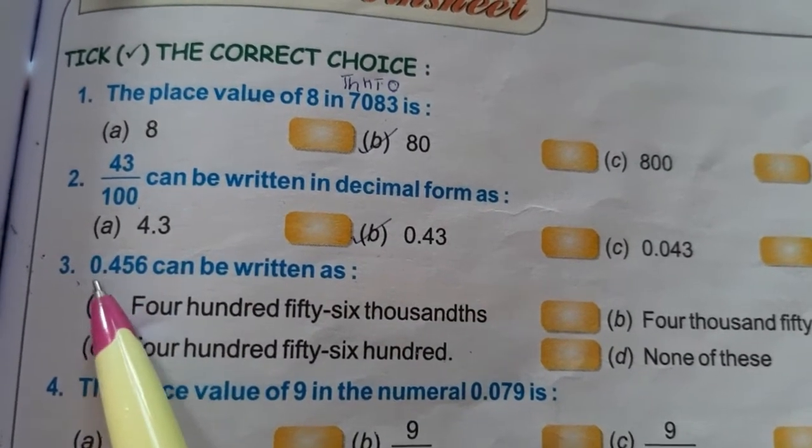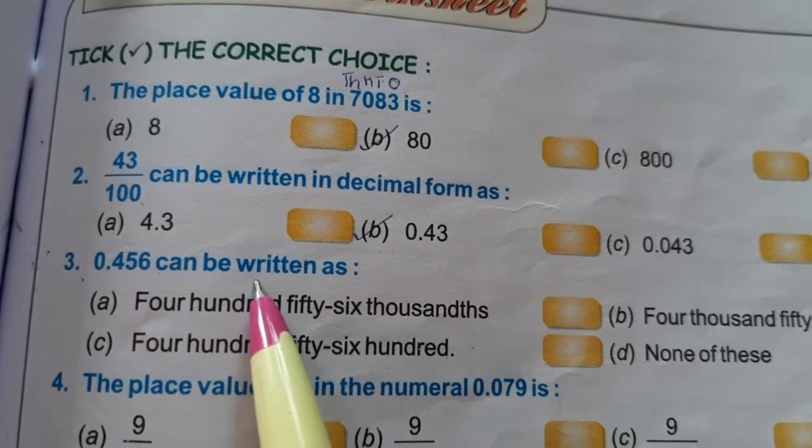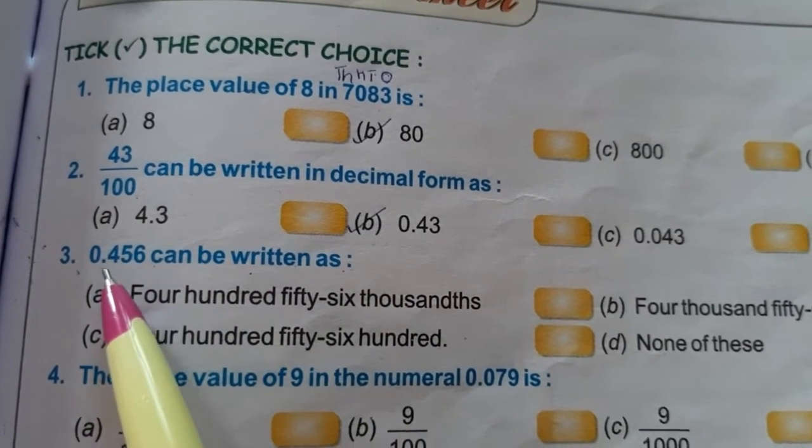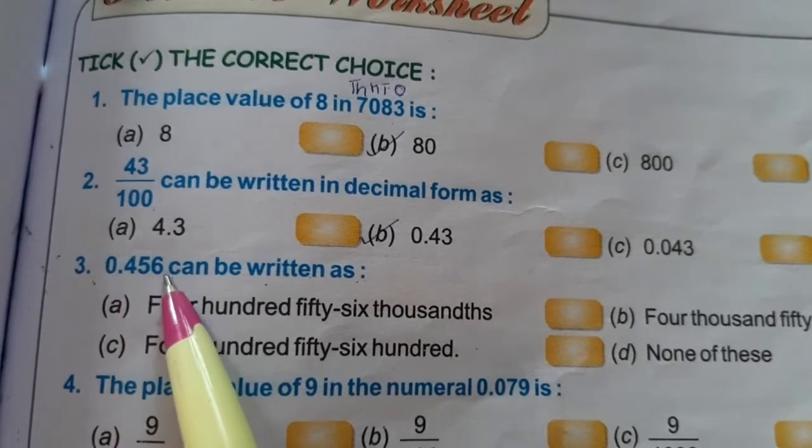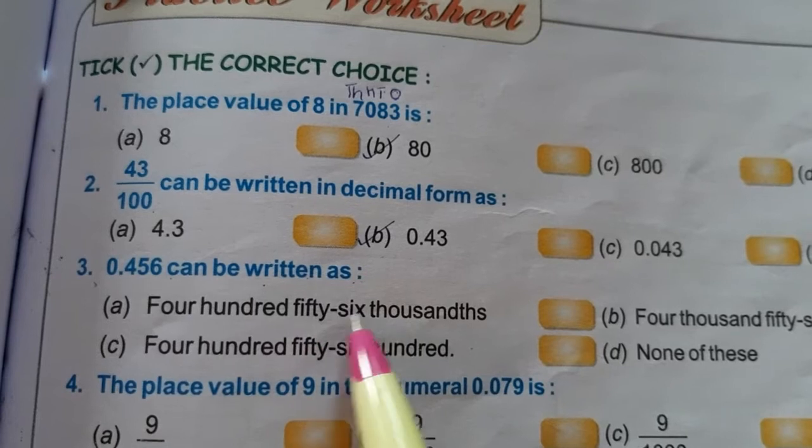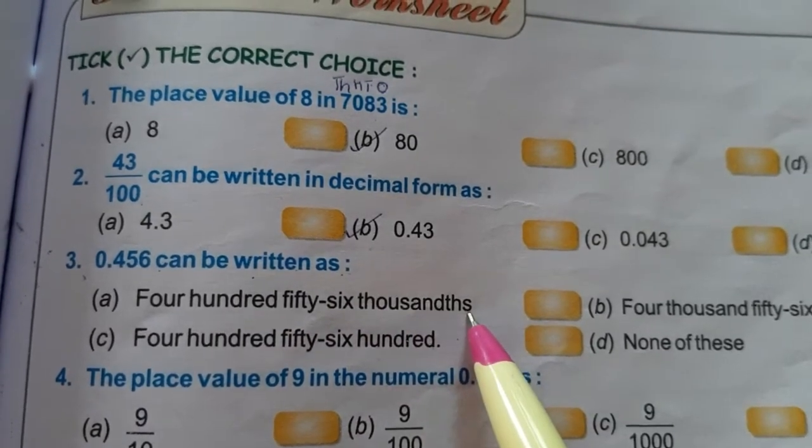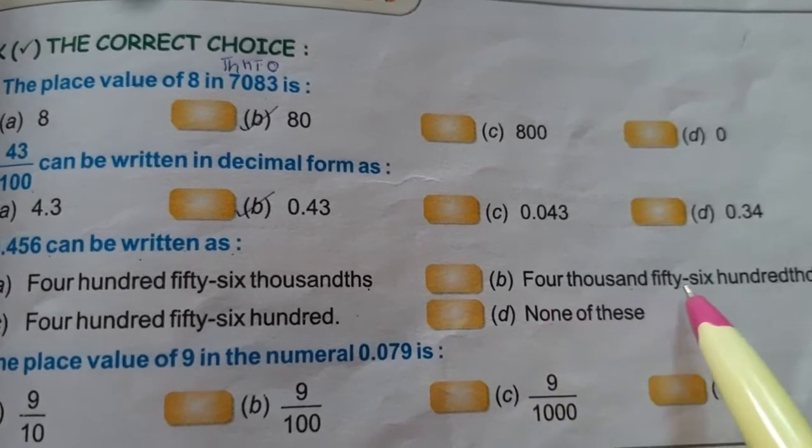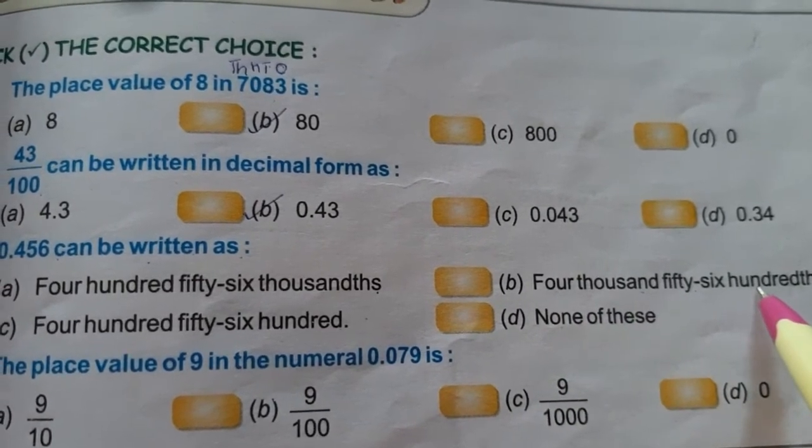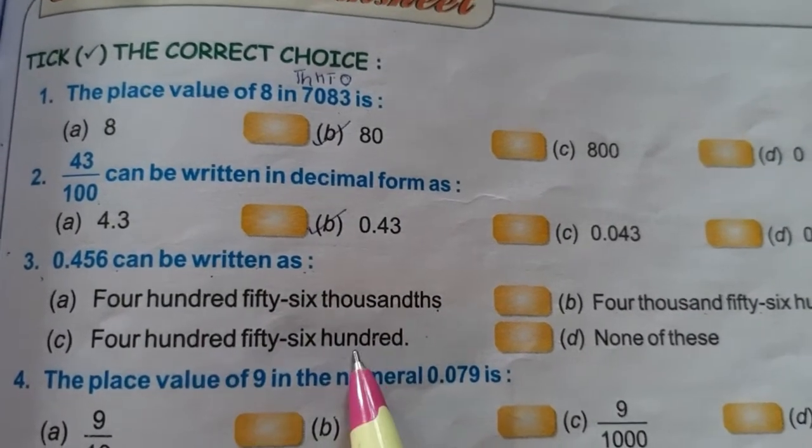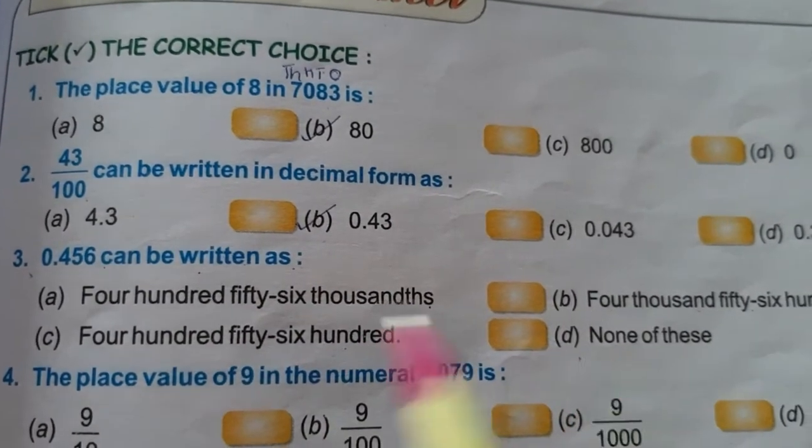Next is 0.456 can be written as. Here 456 thousandths. So 456 thousandths, this option can be the answer. Let us see the other options also. 4,056 hundred - no, it is not 4,000. 4,056 hundred is also wrong. None of these - no. So only A option is the answer.